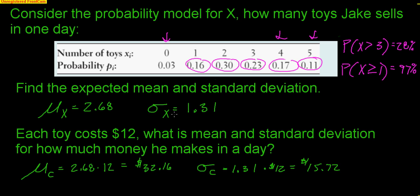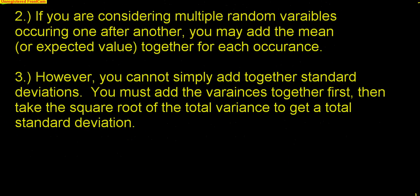Hopefully you understand the idea of just multiplying because you're converting to dollars. Now the next two rules deal with combining multiple random variables together. If you're considering multiple random variables occurring one after another, you may add the means together for each occurrence. So that's easy — day 1, day 2, day 3, just add them together.